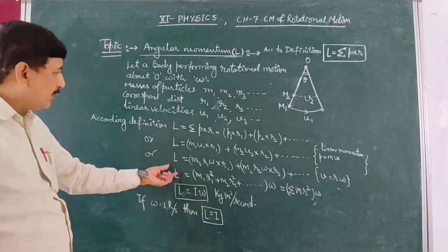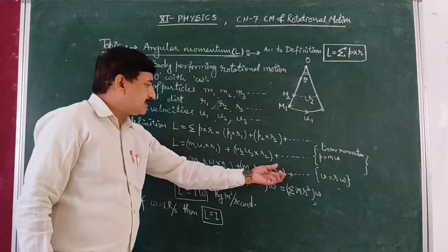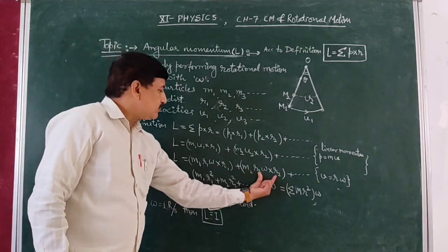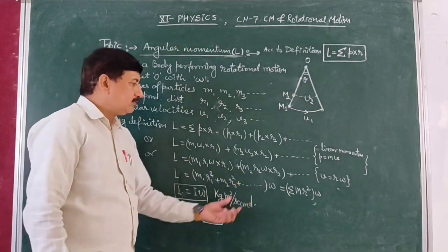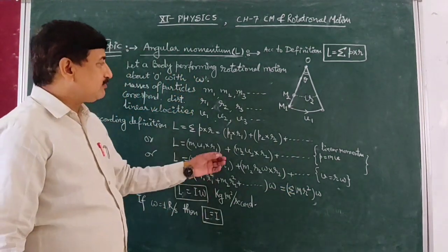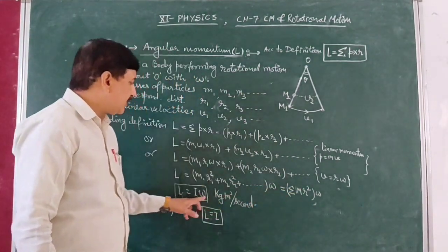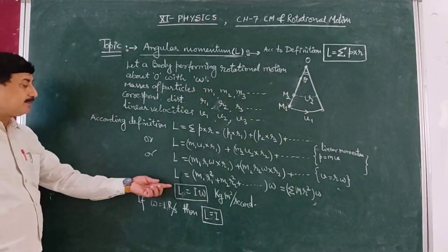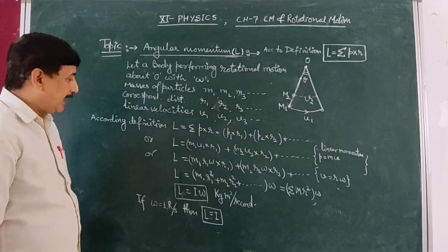So this equals sigma MR squared, which is the moment of inertia I, times omega. The angular momentum equals I omega.